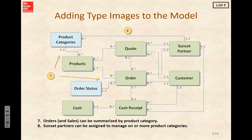Type images can also support control activities by designating responsibility. A Sunset partner could be assigned the responsibility to manage a certain product category. Well, that completes our review here and thank you for joining me.